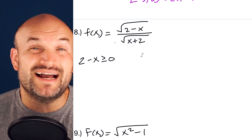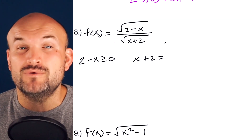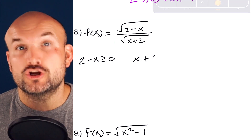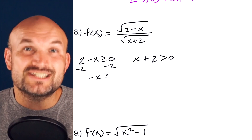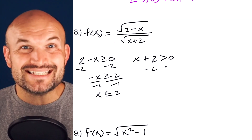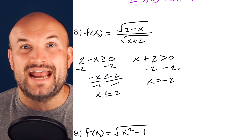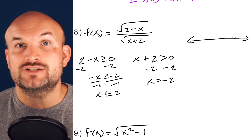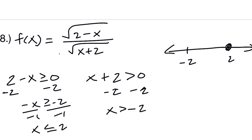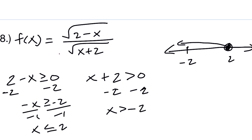In example eight, I have two inequalities: 2 − x ≥ 0 and x + 2 > 0. I solve them separately, then graph them on the same x-axis. The domain is only where both are defined simultaneously, which turns out to be between −2 and positive 2, where positive 2 is included. So the domain is (−2, 2].